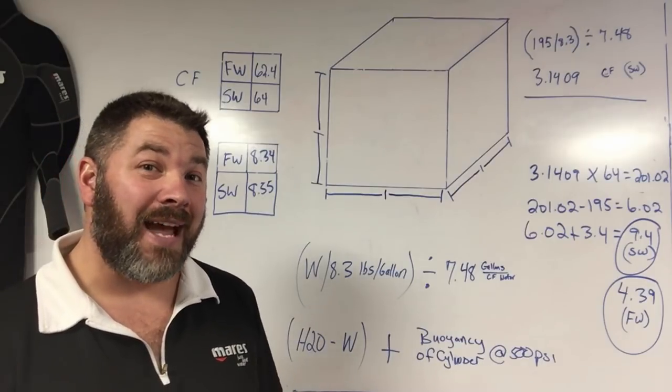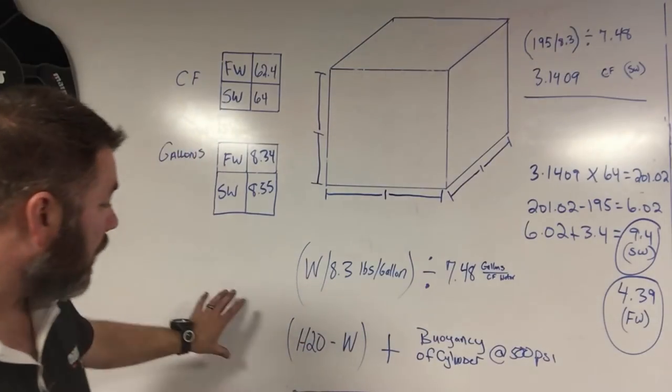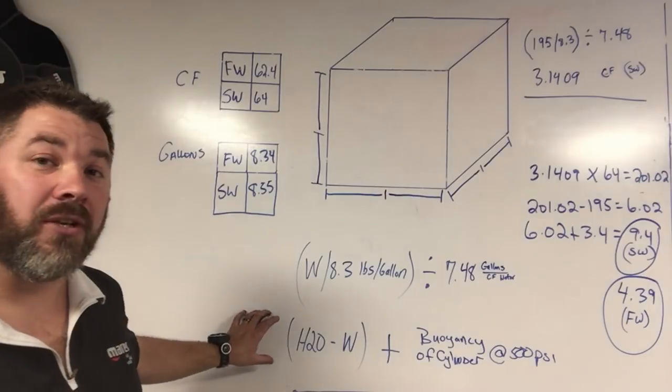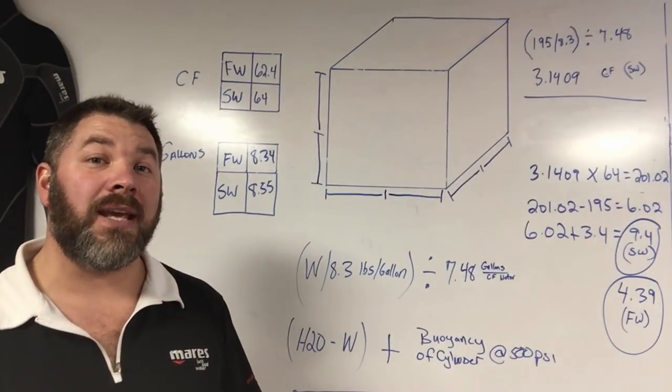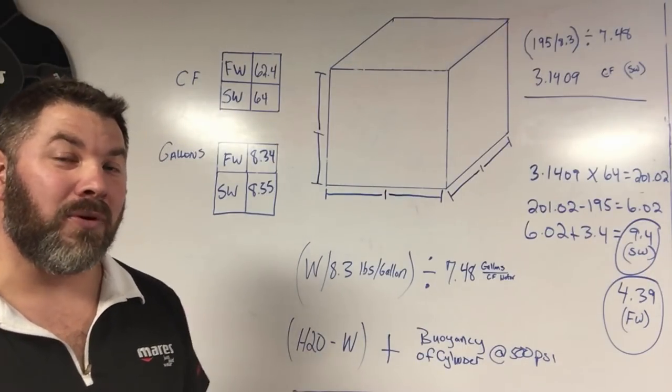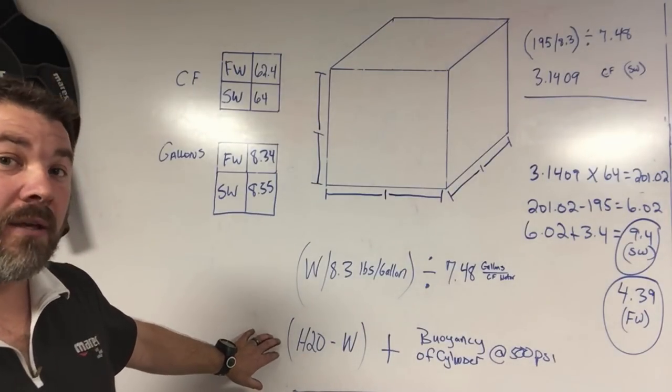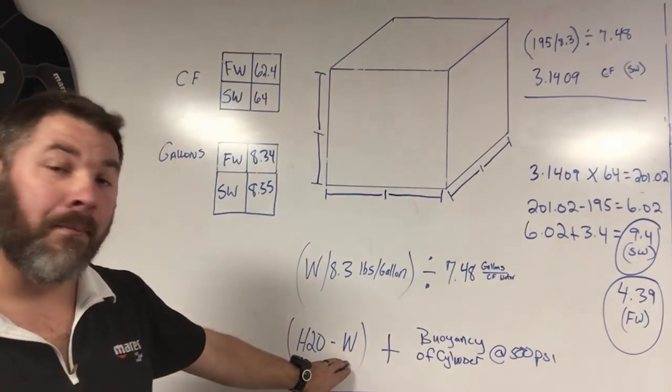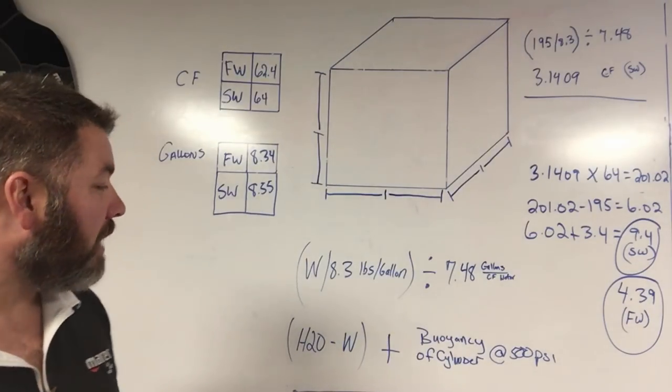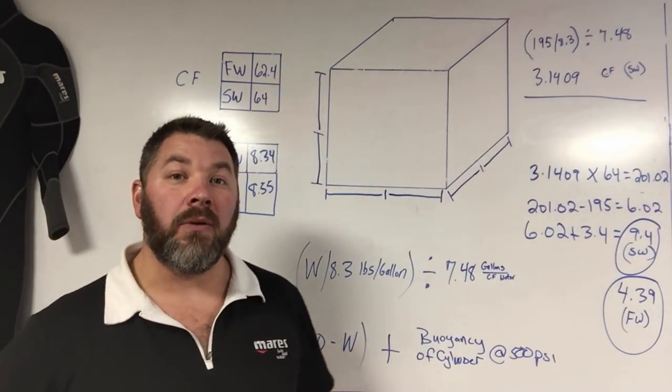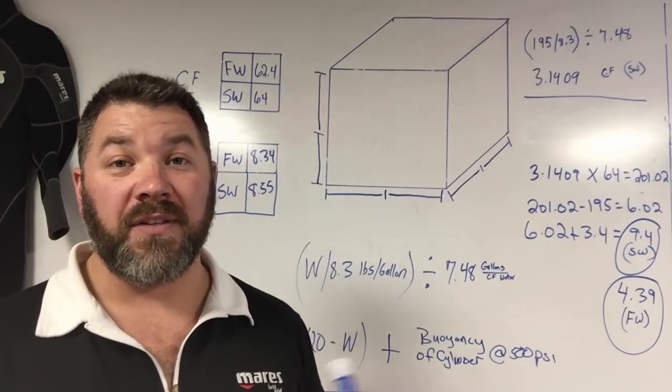Now I can take that number and I can actually determine how much weight it's going to take me to offset the buoyancy of me, or the lift of me if you will. So I take basically the weight of the water that I displace and I'm going to minus my weight from that, and then I actually have to add in the buoyancy back of the cylinder itself.